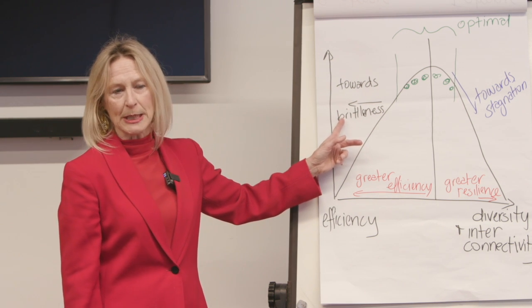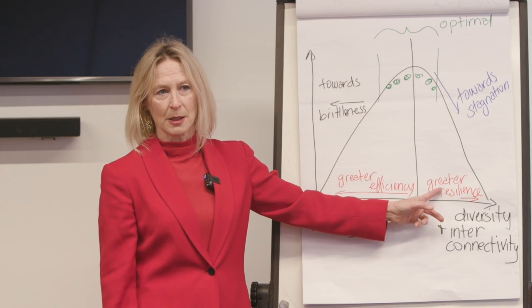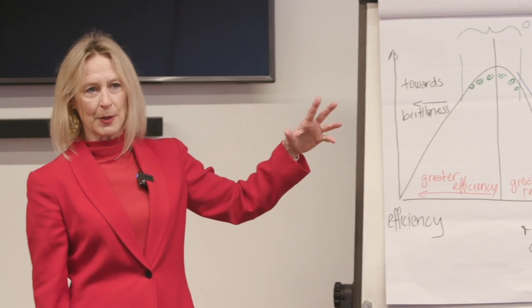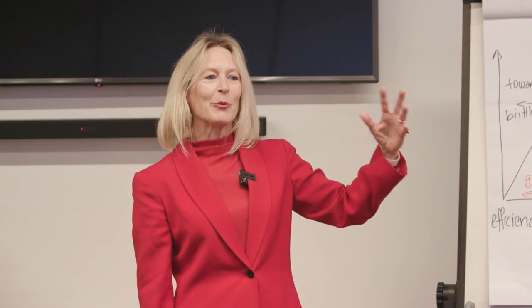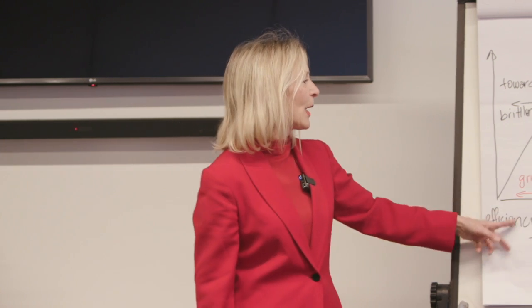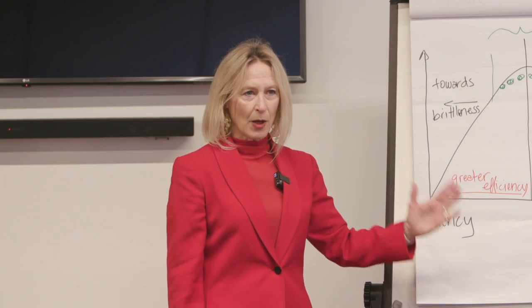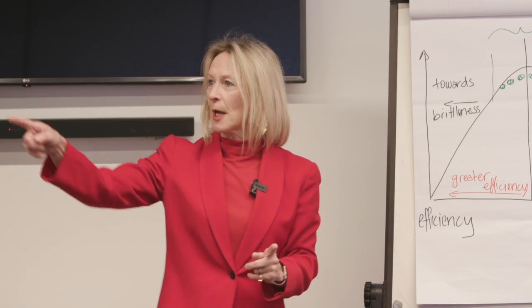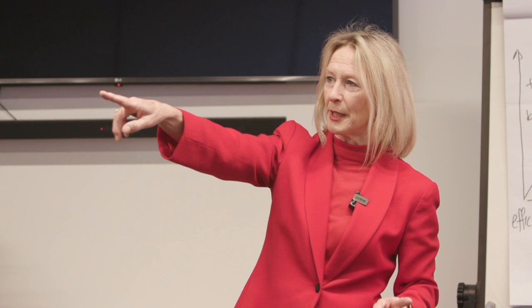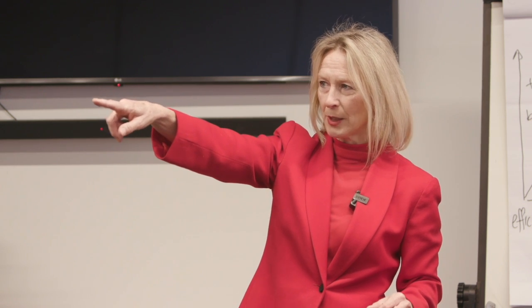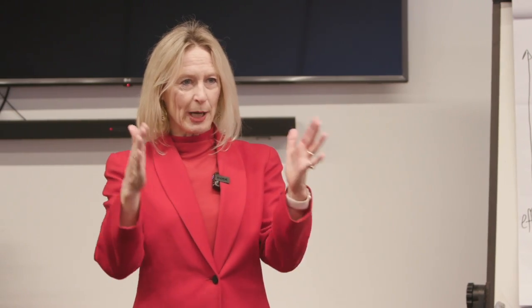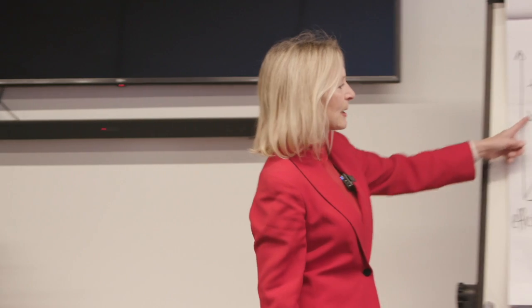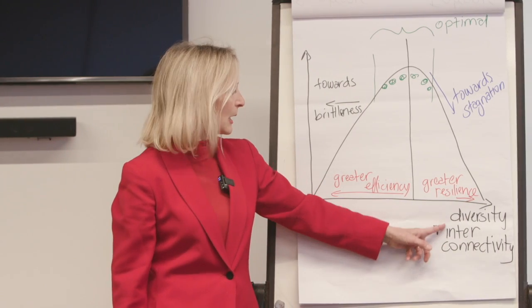Too much efficiency squeezes out all optionality. There are some places where you need high-level efficiency with machines, but we're talking about human systems. If you have too much efficiency — like clockwork — which comes back to the fourth level, which is good/bad, black and white, ethnocentric — everything has order, everything has place, everything has structure — too much of that squeezes out the opportunity for diversity and interconnectedness.